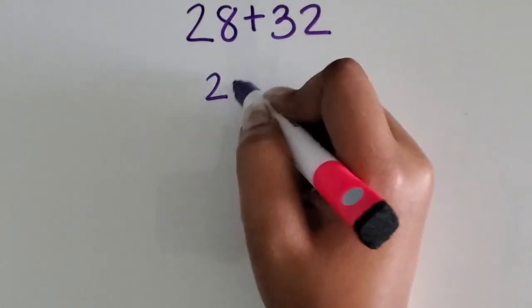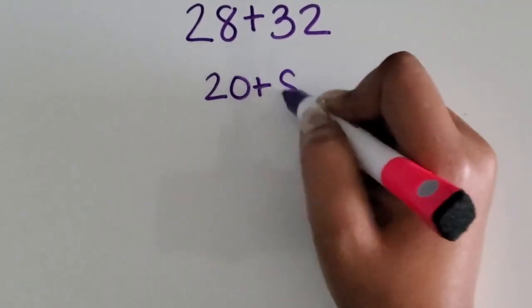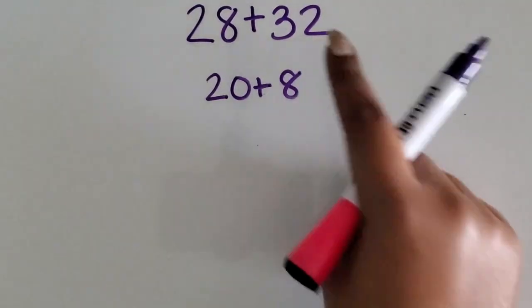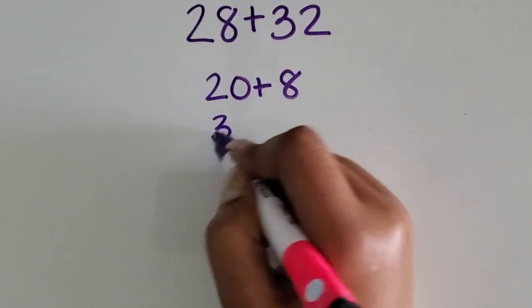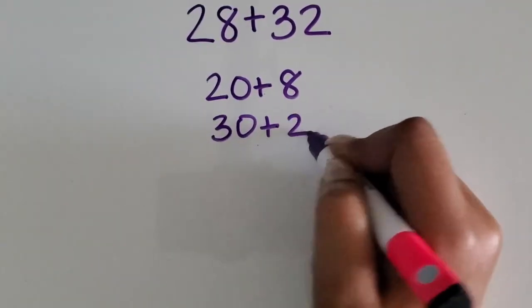So 28 is 2 tens, so that's 20 plus 8. 32 has three tens and two ones, so that's really 30 and 2 together.